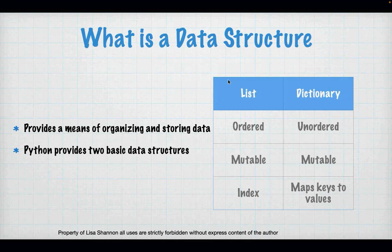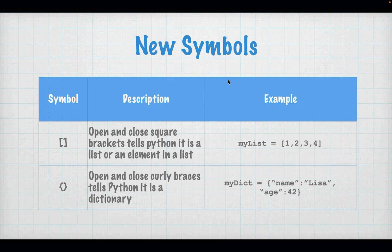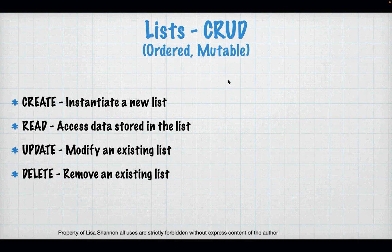A dictionary is unordered, also mutable, and it maps keys to values. There is no concept of an index in a dictionary, which is why it is unordered. There are some new symbols to look at: open and close square brackets denote a list, and open and close curly braces indicate a dictionary. If you see curly braces, your variable will be of type dictionary.